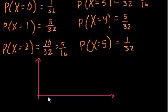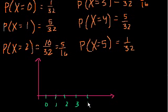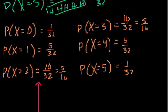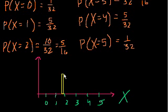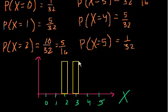The x-axis runs 0, 1, 2, 3, 4, and 5 — number of heads in five trials. The highest probabilities are 10/32 for both 2 and 3. Let me draw a bar graph: 2 and 3 both reach 10/32, so they're the tallest bars.